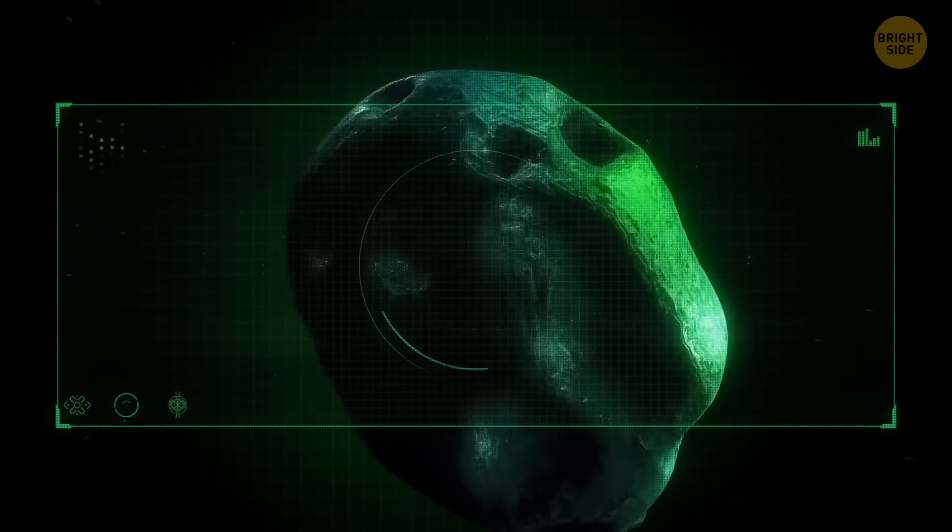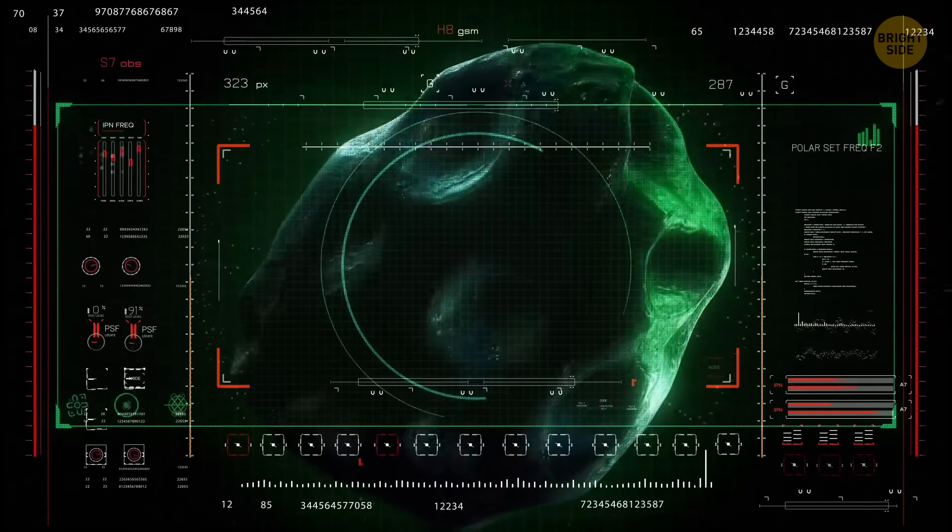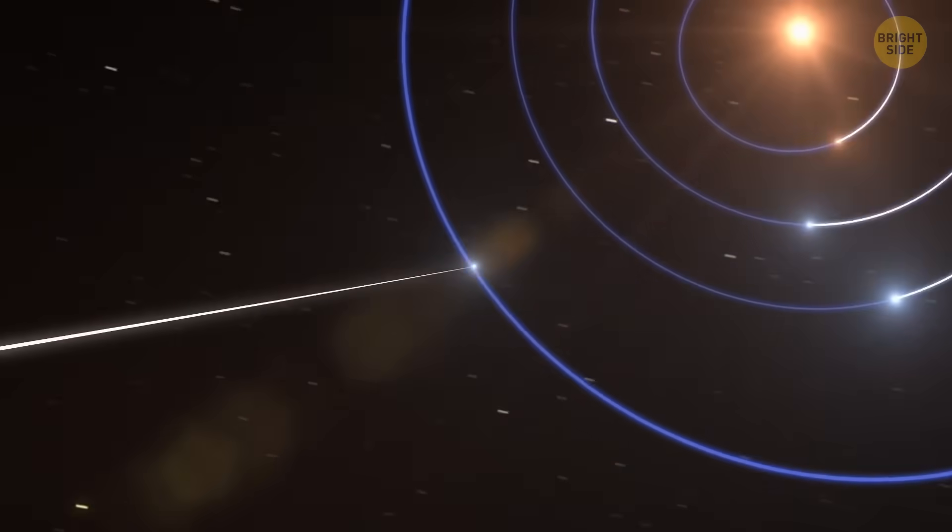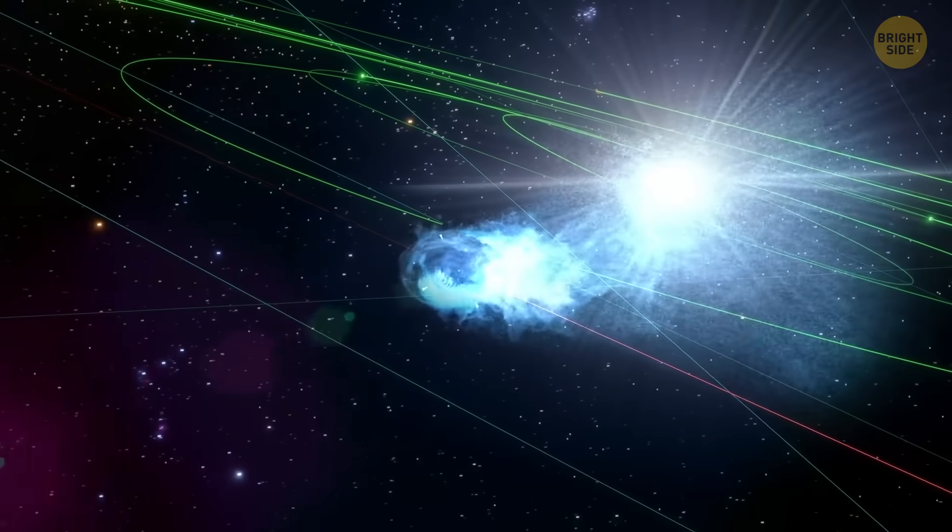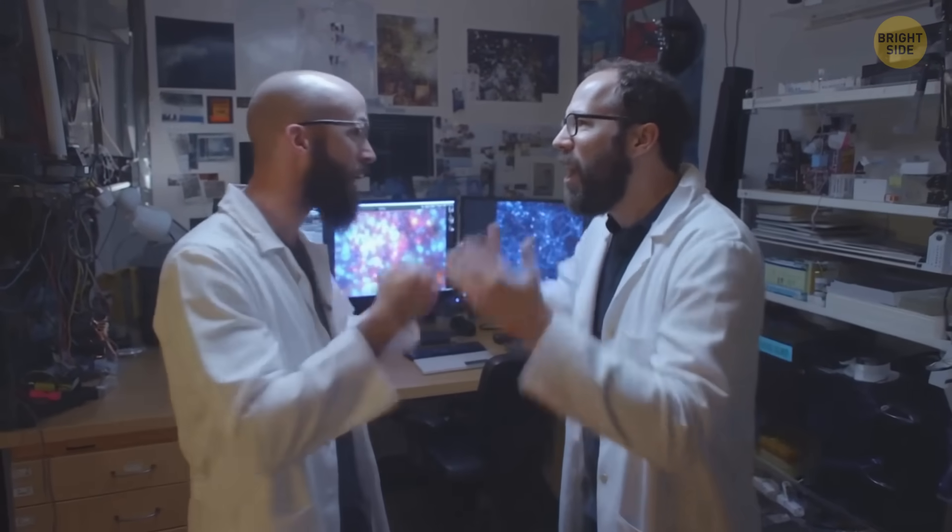If you put all the pieces together, its behavior, its chemistry, and the images we've gotten so far, everything points to 3i Atlas being a comet. But, even with all that, there are still some pretty controversial ideas floating around about what it might be.